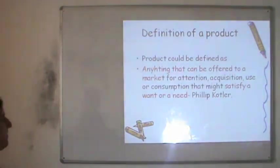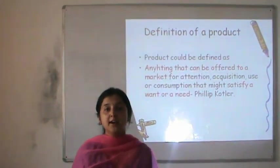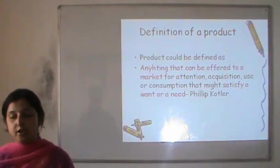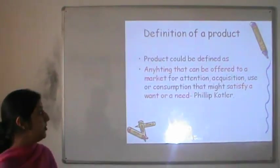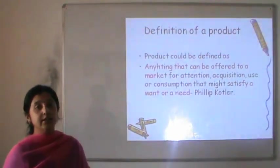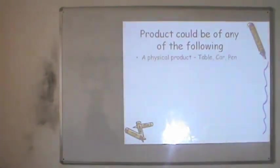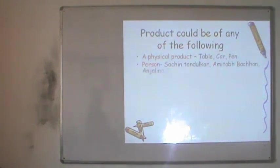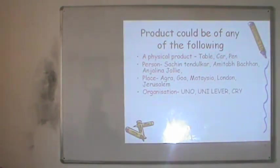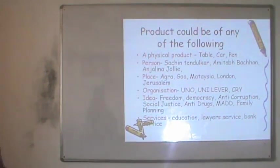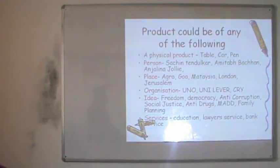It is very important for us to understand what the first marketing mix element — product — signifies to a company. Anything that can be offered to a market for attention, acquisition, use or consumption that might satisfy a need can be considered as a product. A product can come in various forms: it can be a physical product like a table or car, a person like Sachin or Amitabh Bachchan, a place like Agra or Goa, an organization like the UNO, an idea like fight for freedom or anti-corruption, or it can be a service offered by educators, lawyers or bankers.